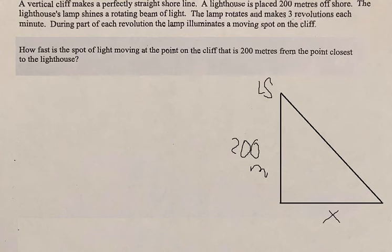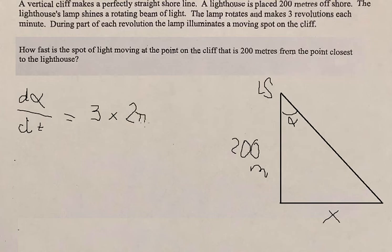Next we have three revolutions each minute, so we need to find dα/dt. We got dα/dt equals 3 times 2π. Why do we have 2π? Because revolutions go in a circle. That's why you got 2π, and you got 6π radians per minute.